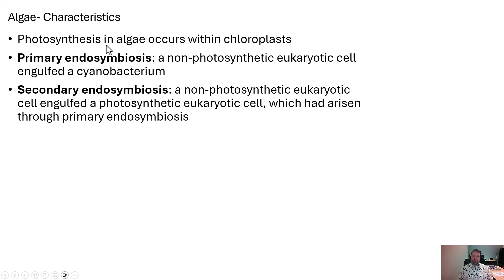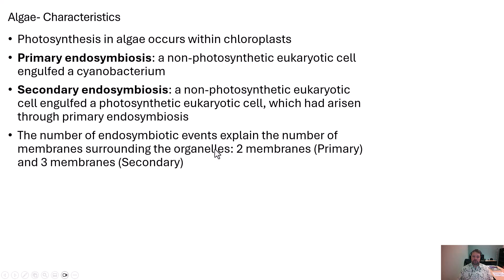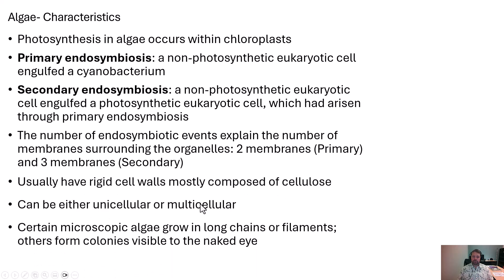The reason we distinguish between these two is because some chloroplasts have two membranes — if they have two membranes, they're from primary endosymbiosis. Some have three membranes, indicating secondary endosymbiosis. So keep that in mind when studying different types of algae: two membranes means primary, three membranes means secondary.